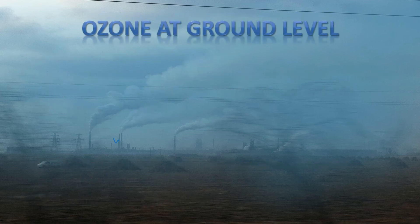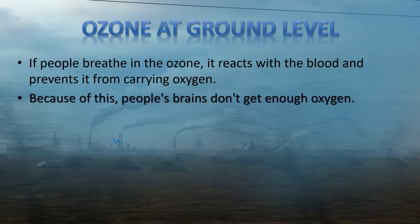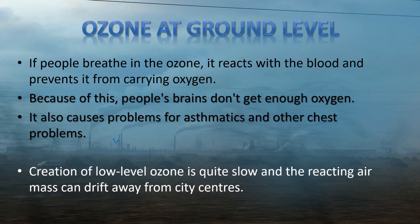But what are the problems of ozone at ground level? Well, if people breathe in the ozone, it can react with the blood and prevent it from carrying oxygen. Because of this, people's brains don't get enough oxygen, and their organs can suffer from not having enough. It also causes problems for asthmatics and other chest problems too. Also, it is not just people in cities where these machines are located that can have problems from low-level ozone. Creation of low-level ozone is quite slow, and so when the weather takes reacting air masses away from cities, it can still be carrying pollutants which will react with the oxygen and create low-level ozone outside the city.